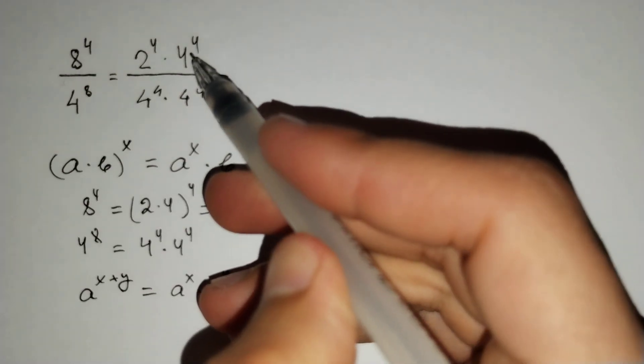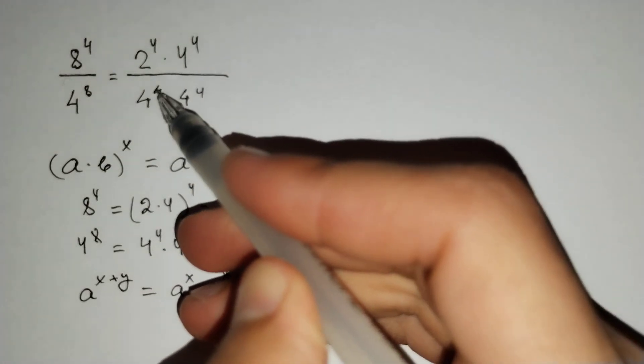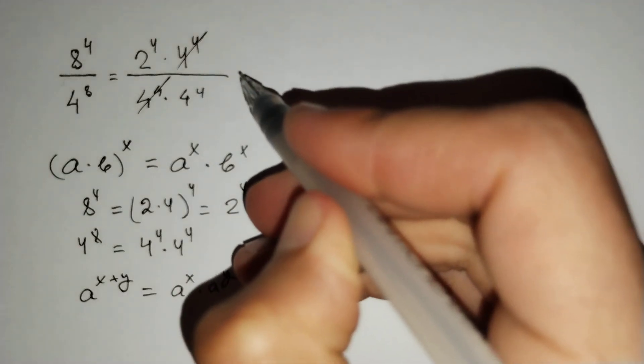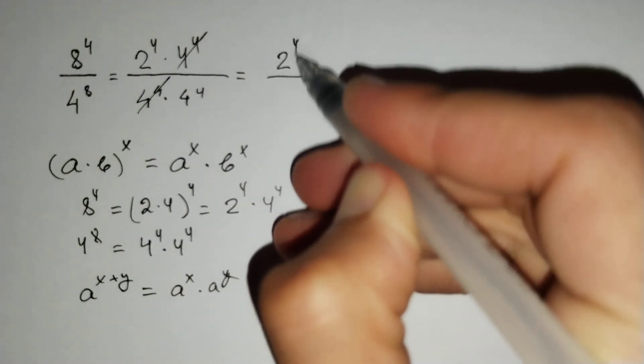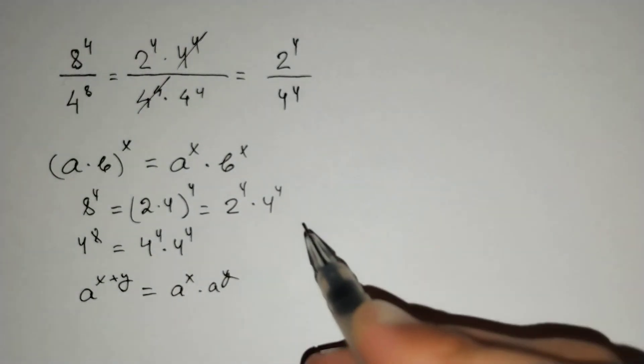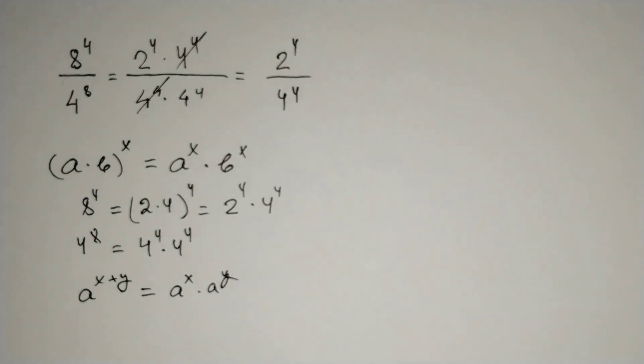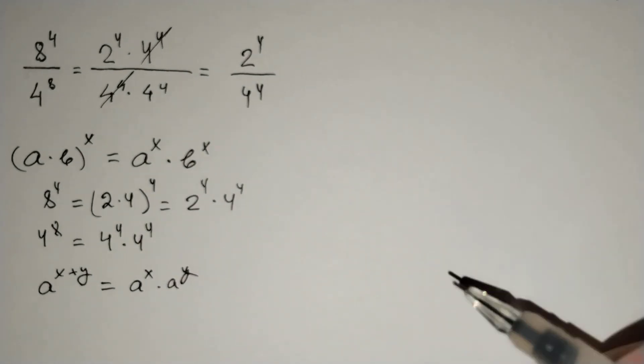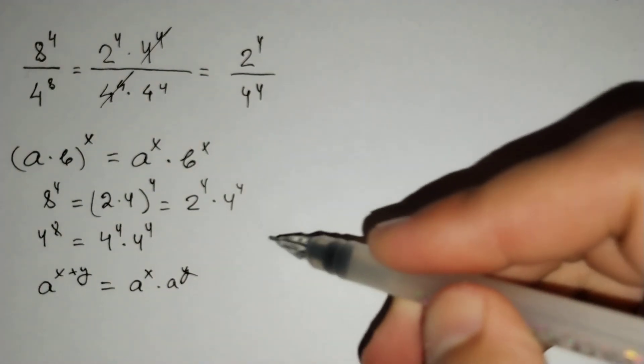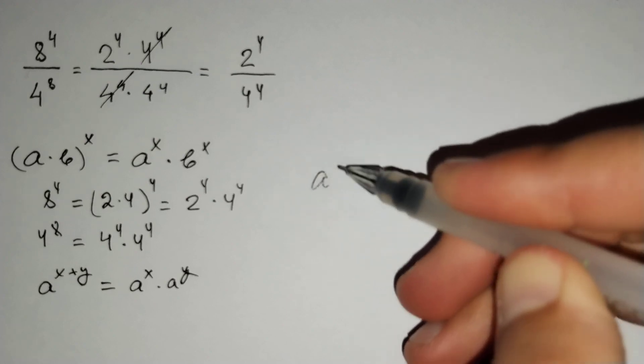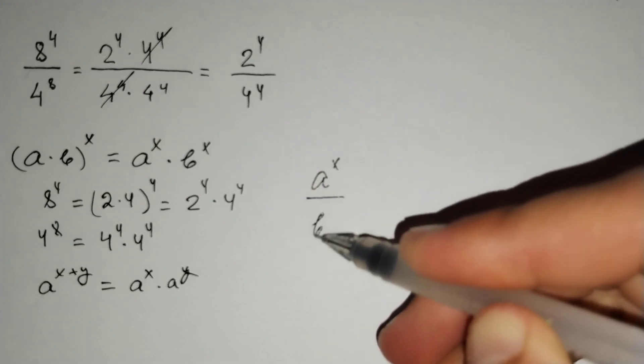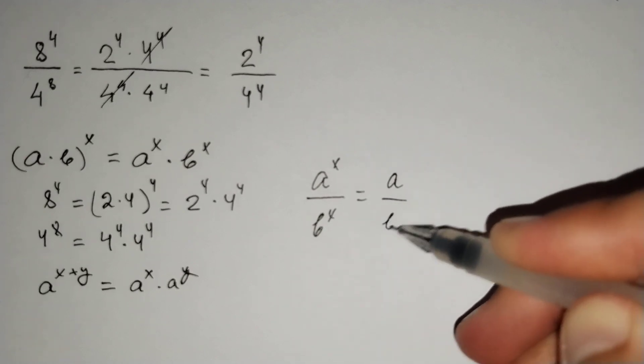2^4 over 4^4 remains here. Then we should also know that a^x over b^x equals (a/b)^x.